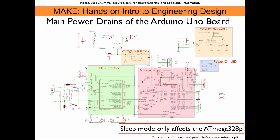Let's have a quick look at the circuit diagram of the Arduino UNO board, downloaded from the arduino.cc website. We see the main units that draw power: the ATmega328P main microcontroller, another microcontroller that deals with the USB interface, and two voltage regulators — one for 3.3 volts and one as the main 5-volt regulator, which allows connecting a 9-volt battery. There is also the power-on LED and the RX and TX LEDs for USB communication. When we go into sleep mode, we only affect the ATmega328P — all the other components are still running.